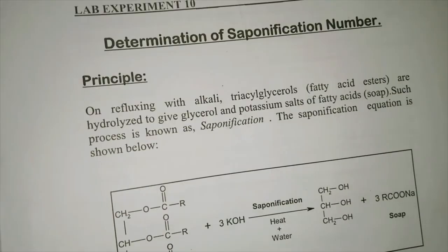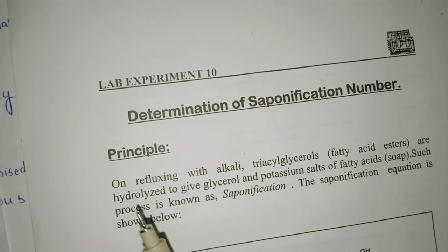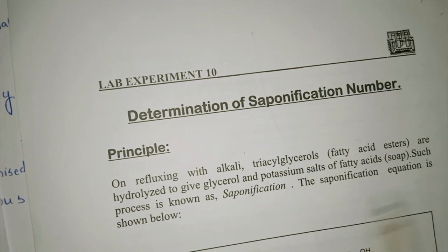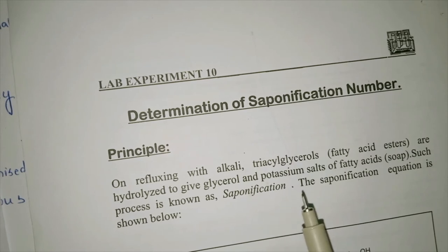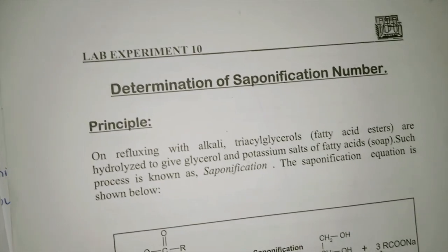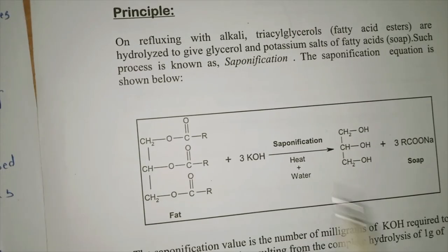For the experimental determination: the principle is that on refluxing with alkali, triacylglycerols (fatty acid esters) are hydrolyzed to give glycerol and potassium salts of fatty acids — this is saponification. The saponification equation: fat + 3 KOH → (heat/water) → glycerol + soap (potassium salts). The saponification value is the number of milligrams of KOH required to neutralize the fatty acids from complete hydrolysis of 1 gram of fat.